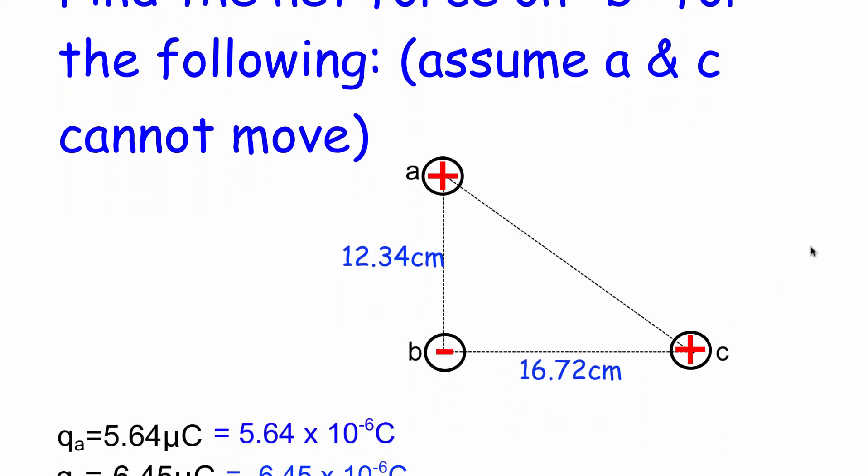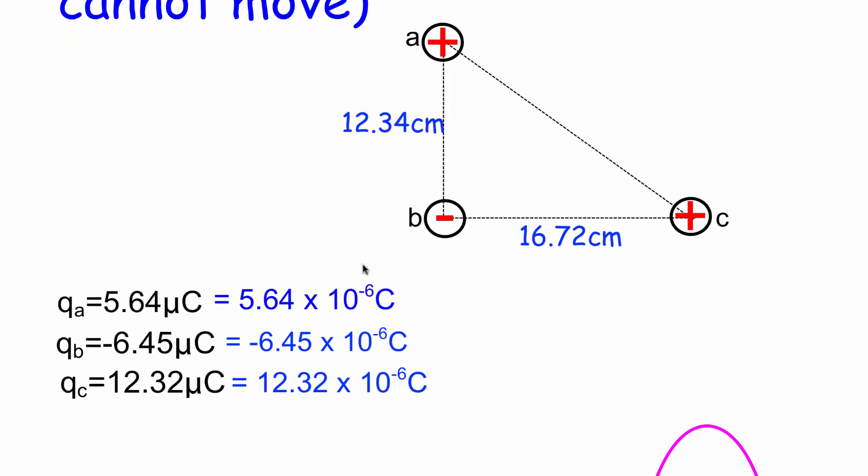The charges are 5.64 microcoulombs for A, which is positively charged, negative 6.45 microcoulombs for charge B, and 12.32 microcoulombs for charge C, which is also positively charged. I've already put it into the correct notation.